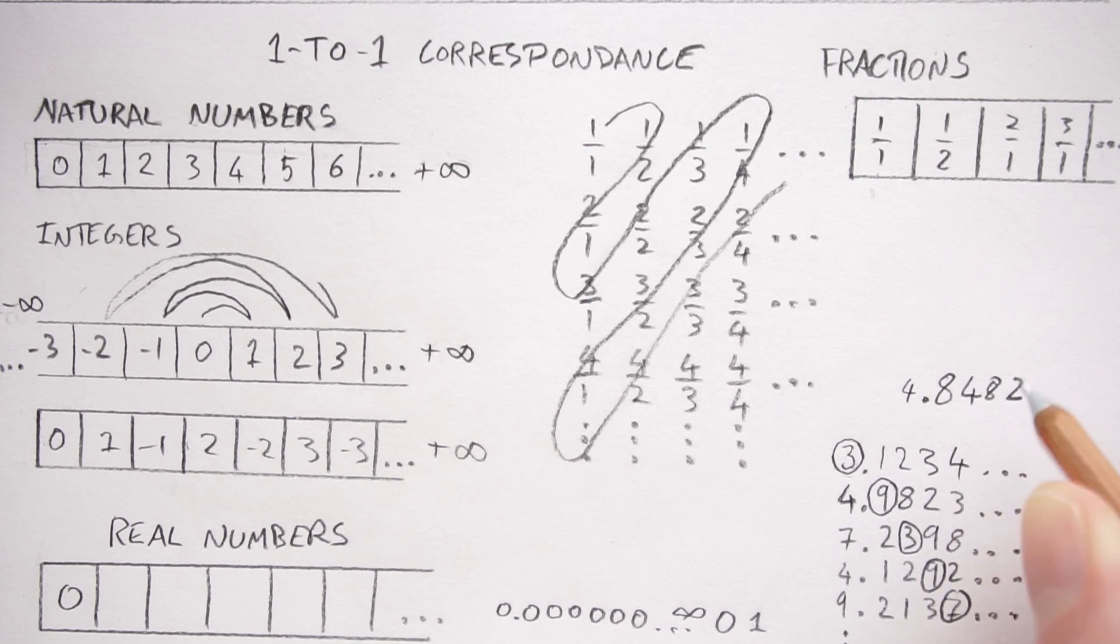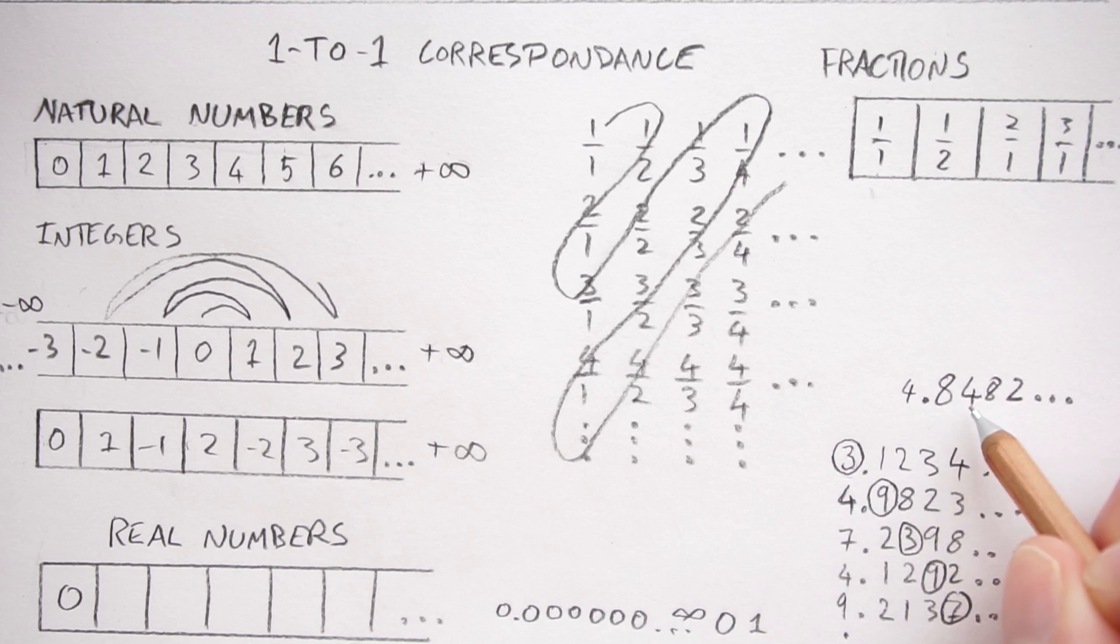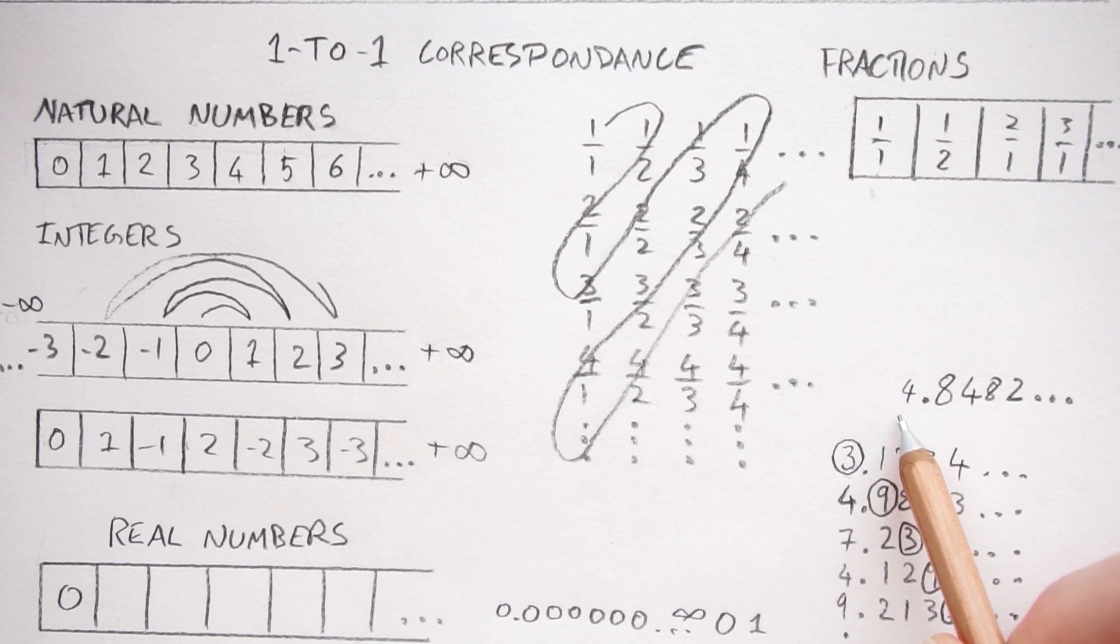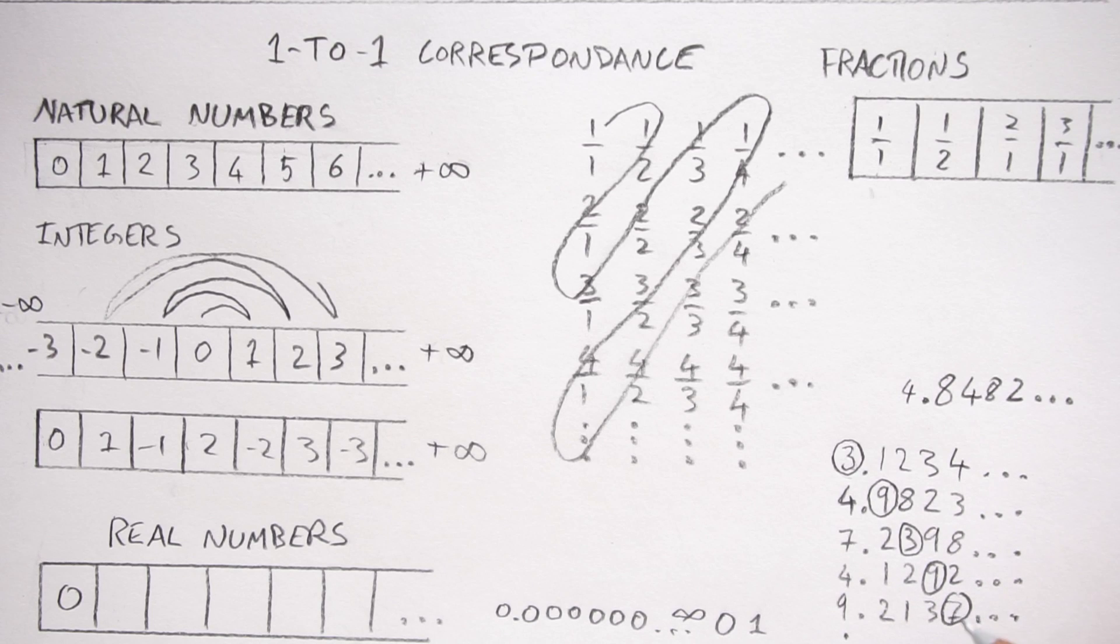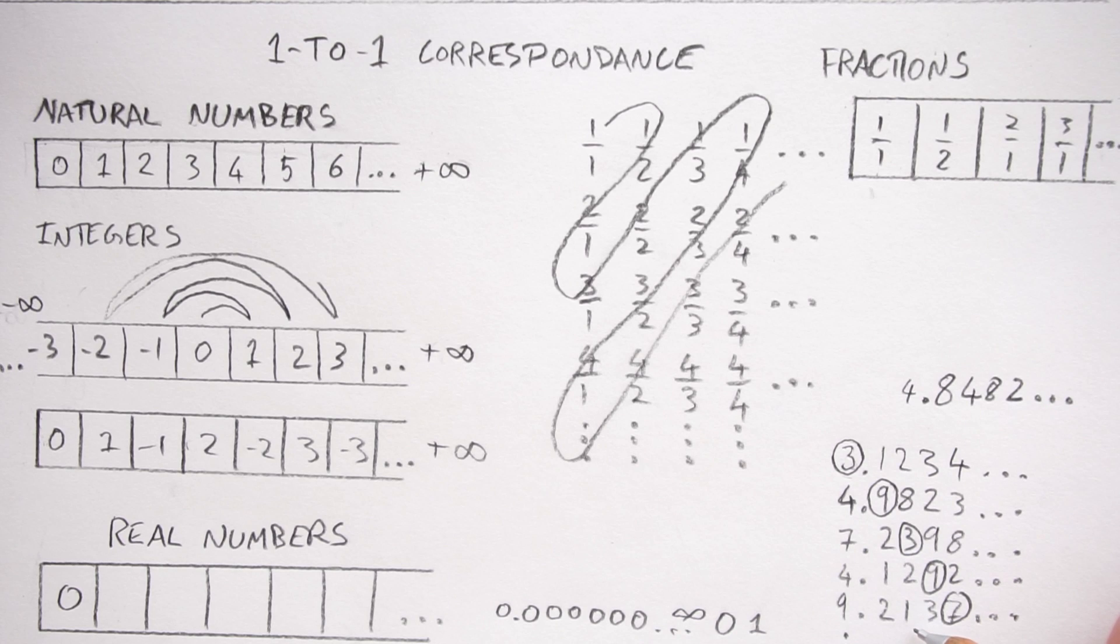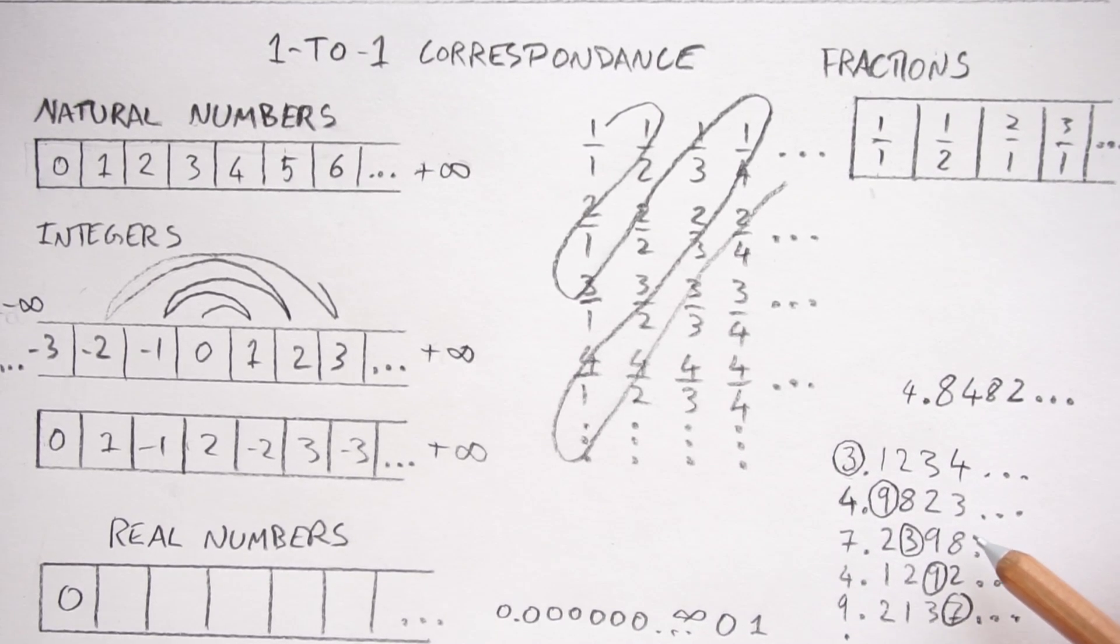And if you keep doing this for every single number in this list you know that this number that you're creating is not going to exist on this list because it's different from the first number, it's different from the second number, it's different from the third and so on. And so George Cantor has now created a new number that's provably not on the dudes list of all the possible real numbers. The trouble is if you add this to the list you can then do it again and you'll create a whole new number that's not on the list and then you can do it again and again and again.